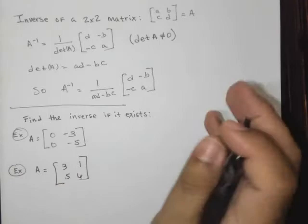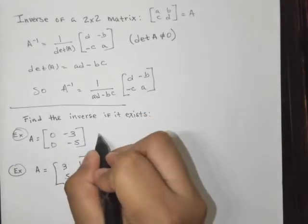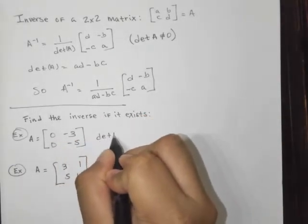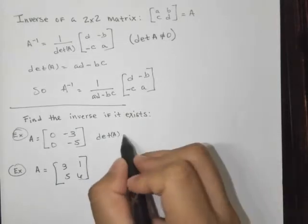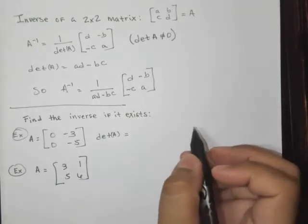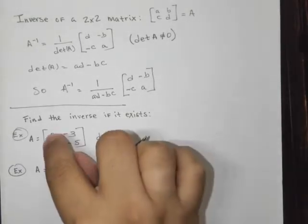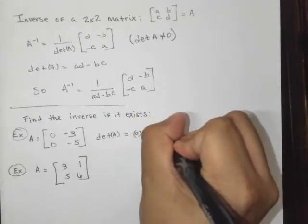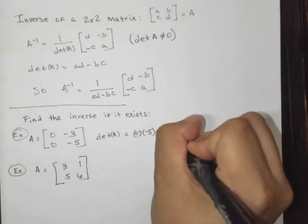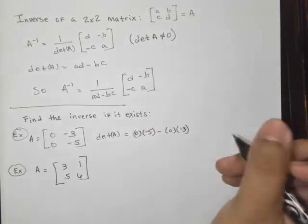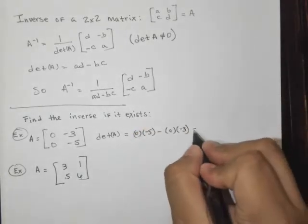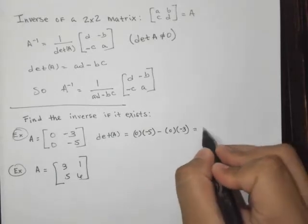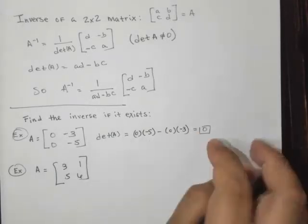So let's take a look at this one. First we're going to find the determinant of the matrix A. And what does that look like? Well, it's 0 times negative 5 minus 0 times negative 3. And this ends up giving us 0 minus 0, which is just 0. So this is 0.